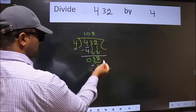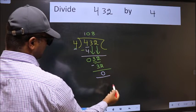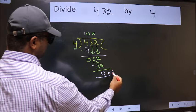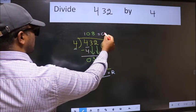No more numbers to bring it down, so we stop here. This is our remainder and this is our quotient.